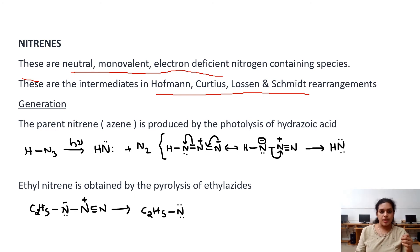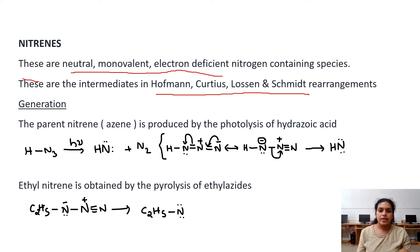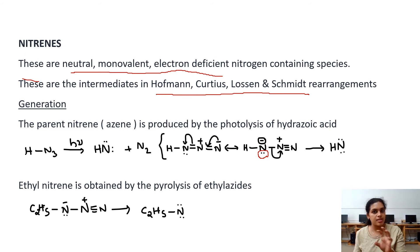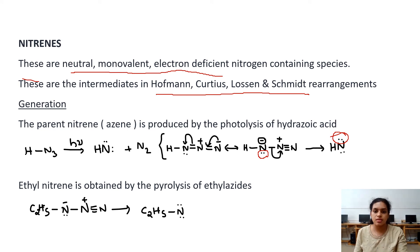Regarding generation, the simplest nitrene is HN, prepared by photolysis of hydrazoic acid. HN3 is hydrazoic acid; on photolysis, HN is formed and is called azine. Two resonance structures are shown. In the second structure, the nitrogen lone pair remains intact and is not involved in the mechanism. A second electron pair appears due to this rearrangement.